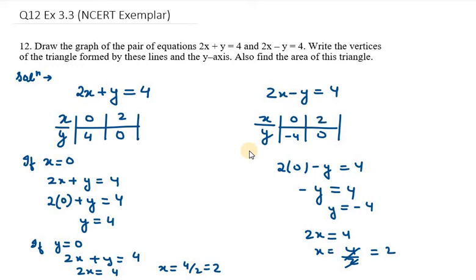So we have now 4 coordinates. For the first one, we have 0, 4. For the second coordinate, it is 2, 0 from this graph. Now for 2x minus y equals 4, it is 0, minus 4 and 2, 0.